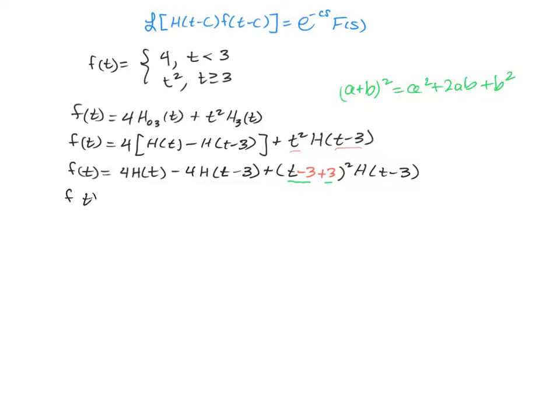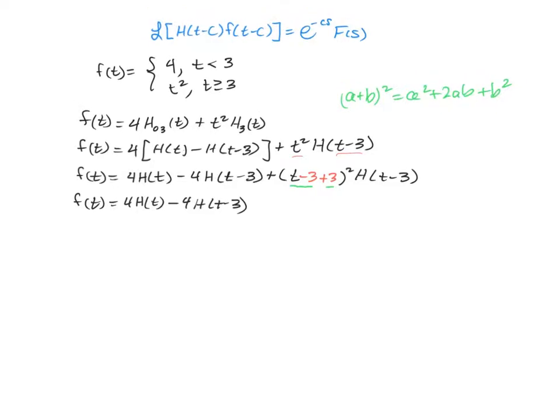So we're going to do the same thing with this term here. We're going to go back, rewrite it as f(t) equals 4h(t) minus 4h(t-3). And then we're going to square this out. We're going to have (t-3) squared plus 2 times the a, which is t minus 3, times the b, which is 3, and then plus b squared, which is going to be 3 squared. And that is all multiplied times the Heaviside at t minus 3.